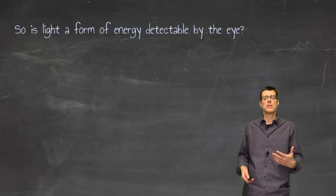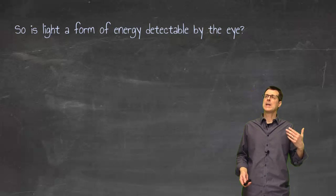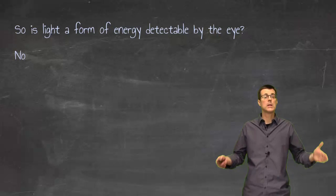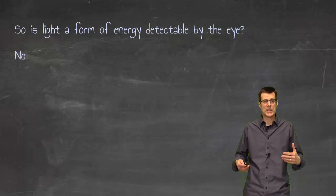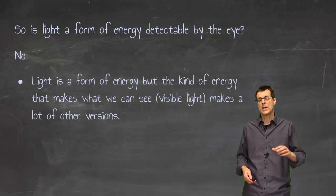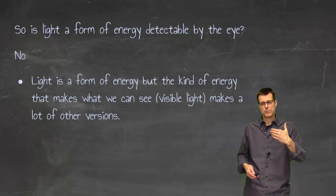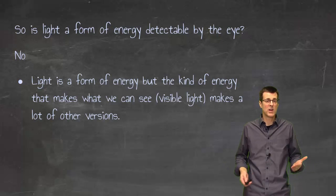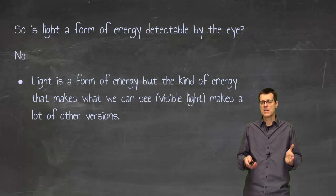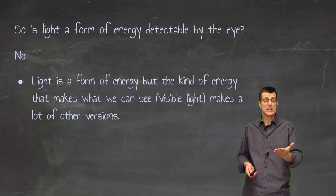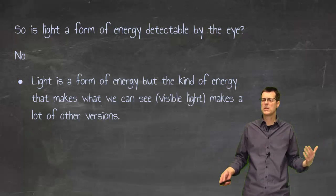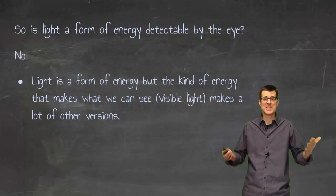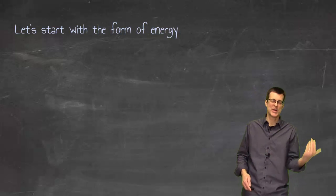Light, you would maybe think that is a form of energy that is detectable by the eye. And at one point in our history, we actually did think that, but we don't think that anymore. Light is a form of energy, but the kind of energy that makes what we see, and also then there's other versions of it. The things that make up light energy that we can see also makes up other things that we don't really call light, but we understand them to be the same form.